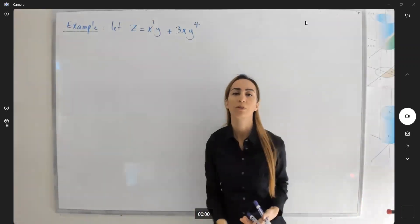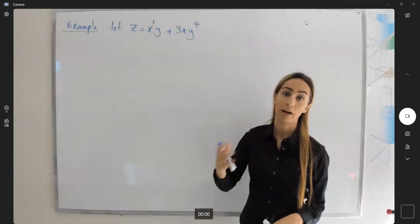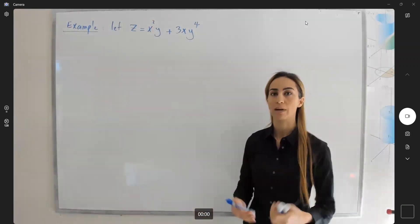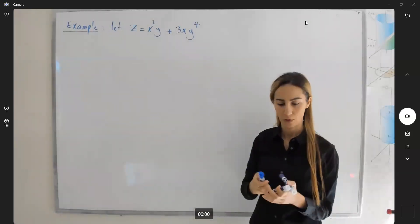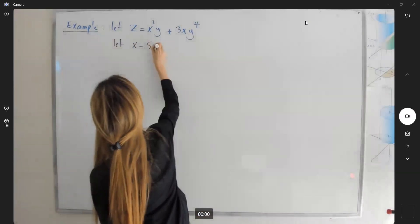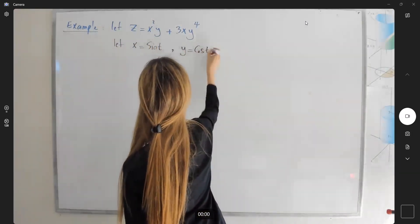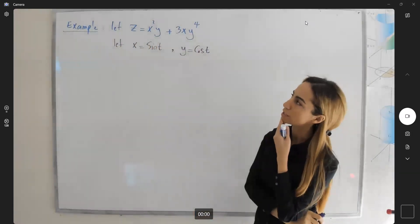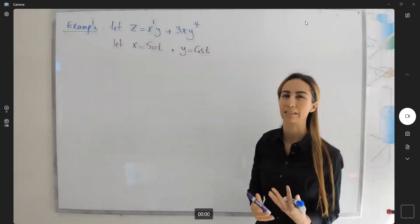We're going to introduce a new variable like t — you can think about t as time, or theta as the angle. So we're going back to parametric equations. We're going to define x and y as functions of t. Suppose x is sine of t, x is a function of t, and y is cosine t. Now the question is: how do I take the derivative of z with respect to t, this new variable?